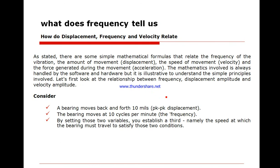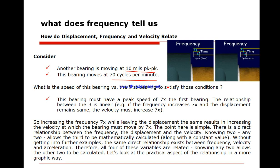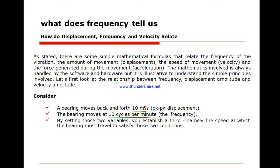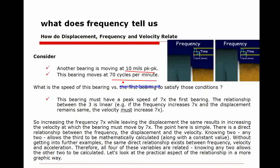If you have a bearing moving 10 mils doing 10 cycles per minute, and you have another bearing moving 10 mils doing 70 cycles per minute, which one would you expect to get damaged first? If you have a bearing doing 10 mils and this one is doing 10 mils, but the first one is doing 10 cycles per minute, the second doing 70 cycles per minute, which one would you expect to be damaged faster?